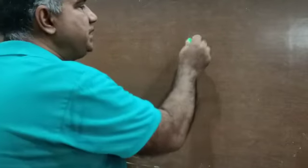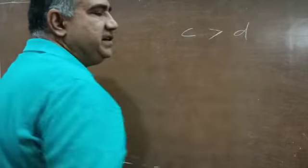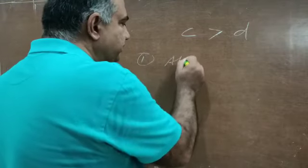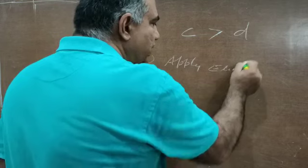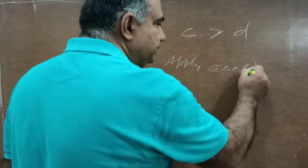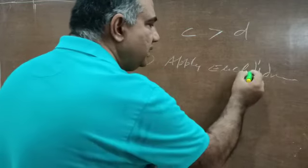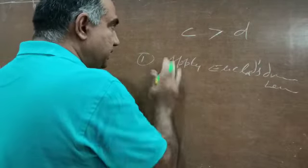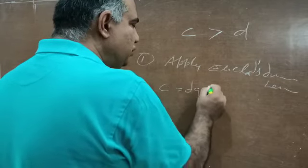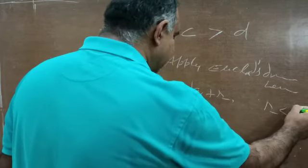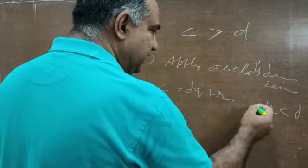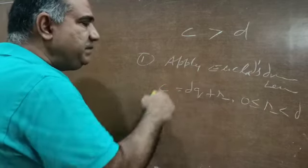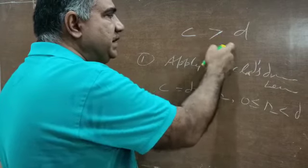Suppose in general terms we are given two quantities C and D, where C is greater than D, and we need to find out the HCF. The first step is to apply Euclid's Division Lemma: C is equal to DQ plus R, where R must be less than D but can be equal to or greater than 0. This was the first step for finding out HCF of C and D, where C is greater than D.